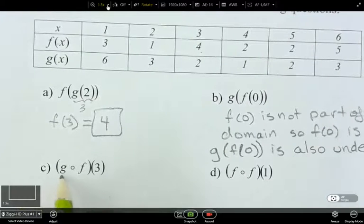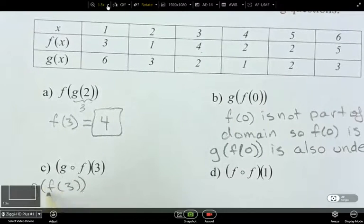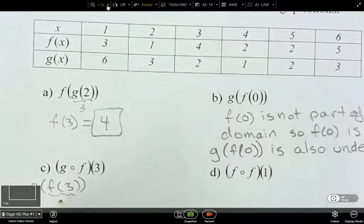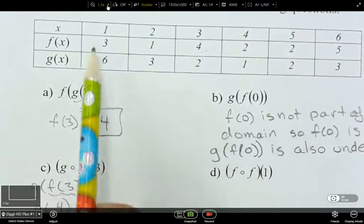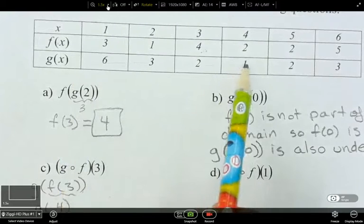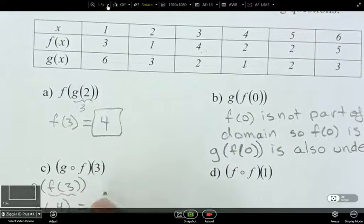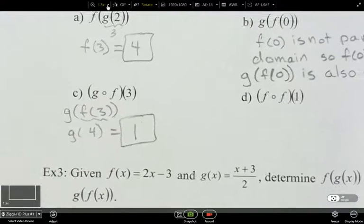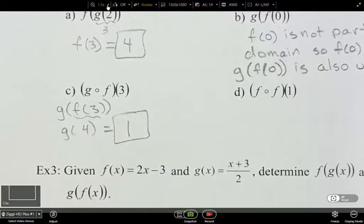So here, g of f of x. So g of f of 3. So let's figure out f of 3 first. So f of 3 is 4. So then I'm looking for g of 4. So what's g of 4? g of 4 is 1. Whoa, you guys can't see any of that. That wasn't good.